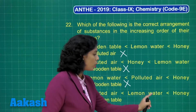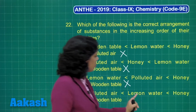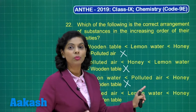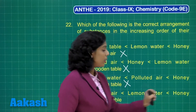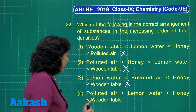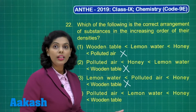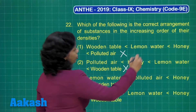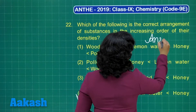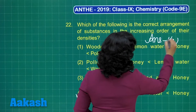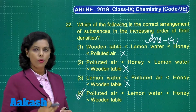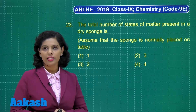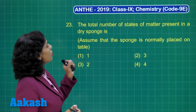The last option states: polluted air has the least density, then lemon water, then honey, then wooden table — each step increasing. Polluted air less than lemon water — correct. Lemon water less than honey — correct, honey is thicker. Honey less than wooden table — correct. So the correct answer is option 4.